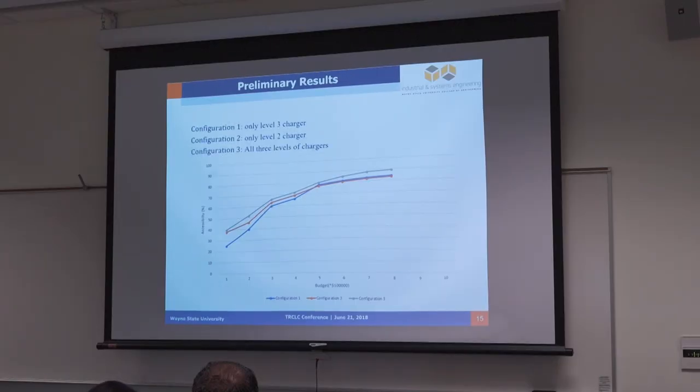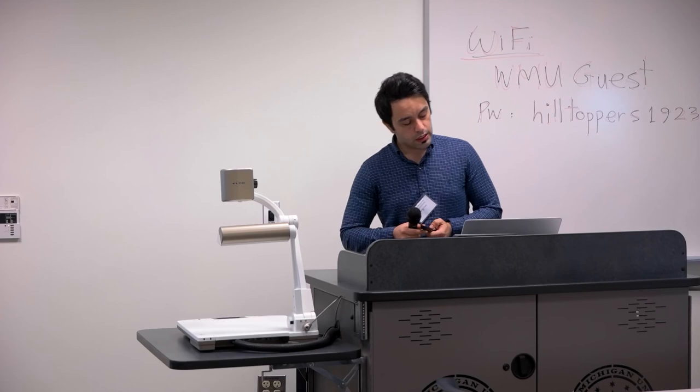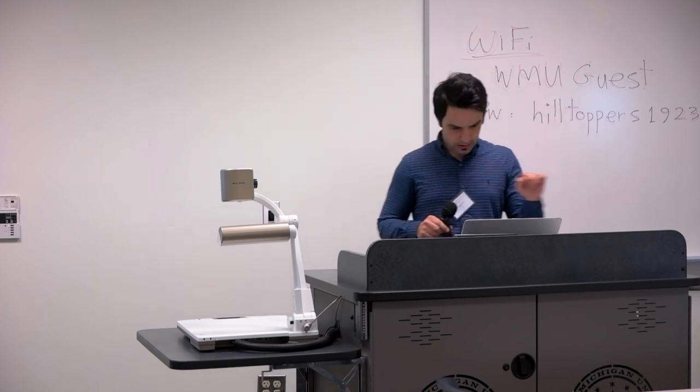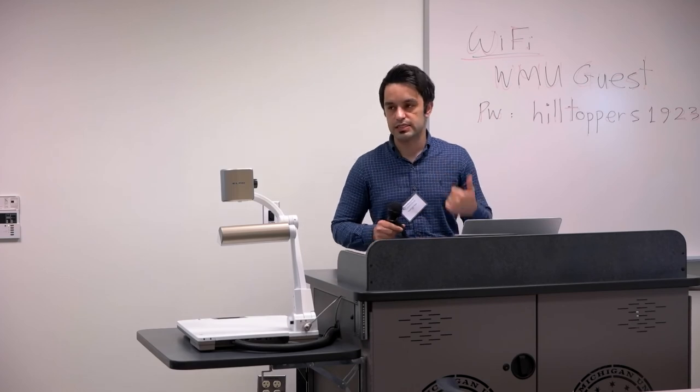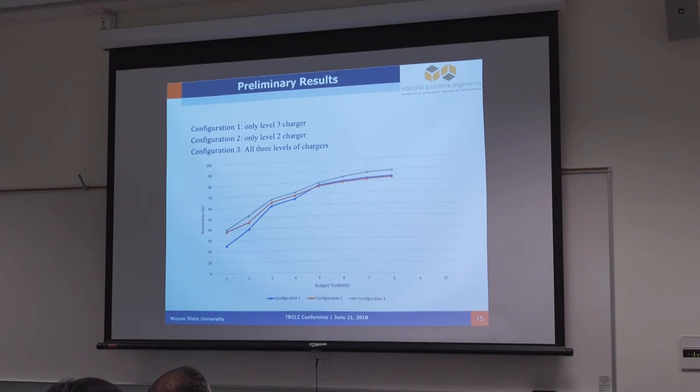The initial results show we use three configurations: if we install just level 3 charger, if we install just level 2 charger, and if we install all three chargers. The results show the x-axis is budget that we have and y-axis is accessibility to charging station. As we can see, by using all three chargers, we can have more accessibility to charging stations.